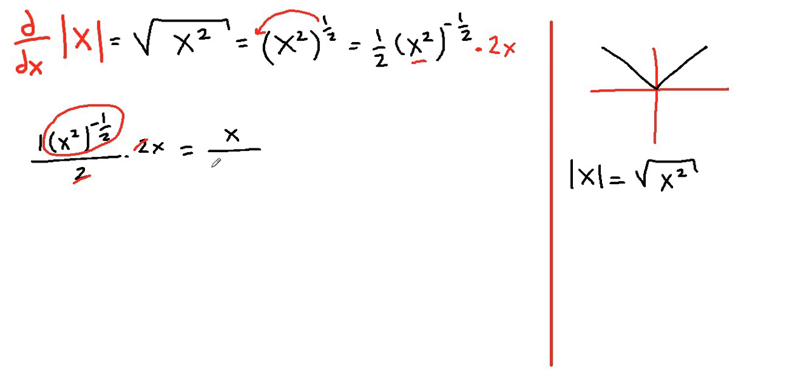So it's going to be x over x to the second raised to the 1 half. And we know that x to the second raised to the 1 half is our absolute value of x. So derivative of absolute value of x is x over absolute value of x.